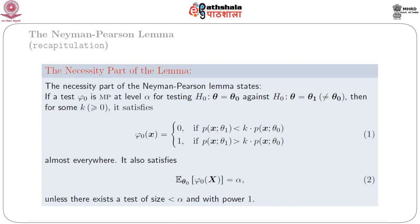Next, we come to the necessary part of the proof of the Neyman-Pearson Lemma with the help of a measure-theoretic approach. The necessity part states that if a test phi-naught is most powerful at level alpha for testing the simple null hypothesis theta equals theta-naught against the simple alternative theta equals theta-1, then for some k greater than or equal to 0, it satisfies: phi-naught(x) equals 0 if p(x; theta-1) is less than k times p(x; theta-naught), and equals 1 if p(x; theta-1) is greater than k times p(x; theta-naught), almost everywhere. It also satisfies E_{theta-naught}[phi-naught(x)] equals alpha, unless there exists a test of size less than alpha with power 1. We call these equations 1 and 2.